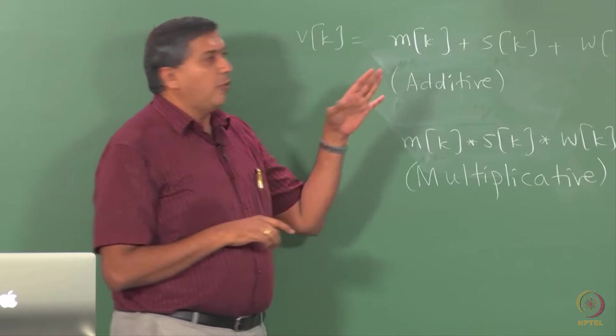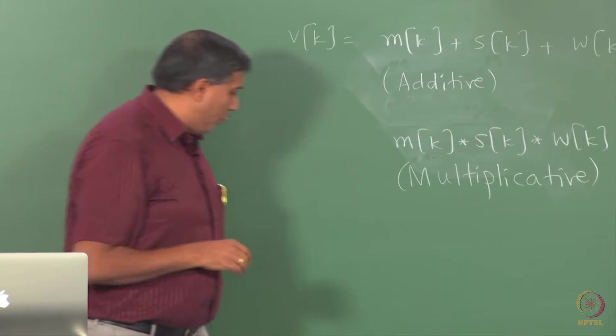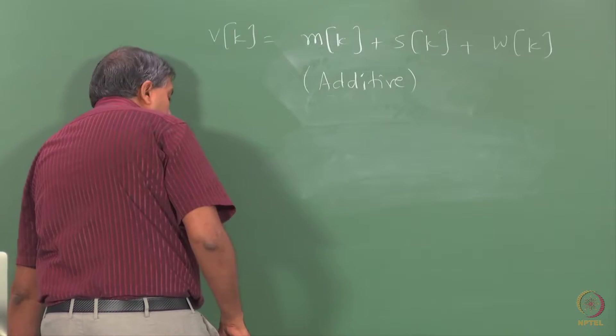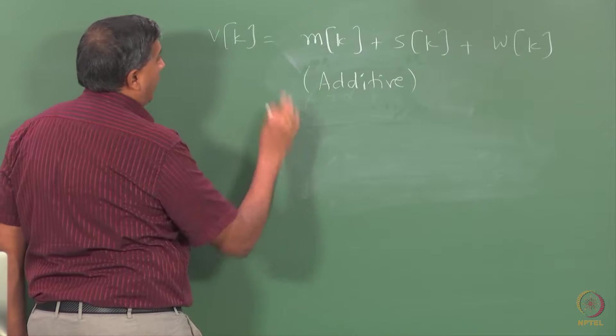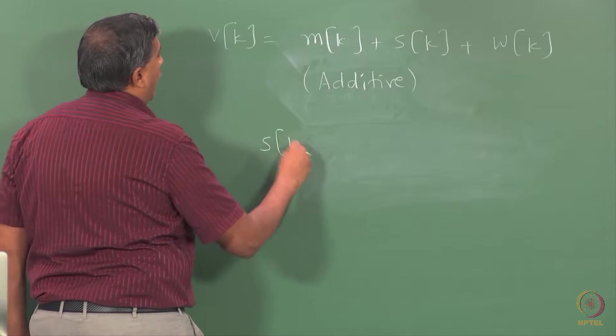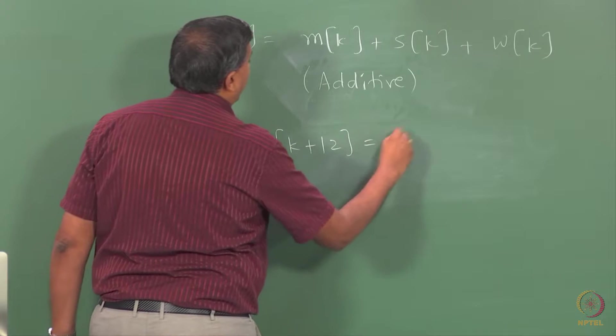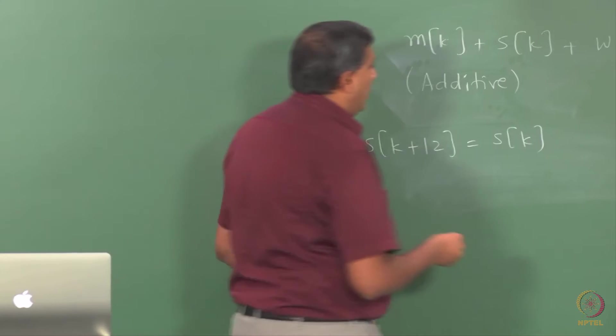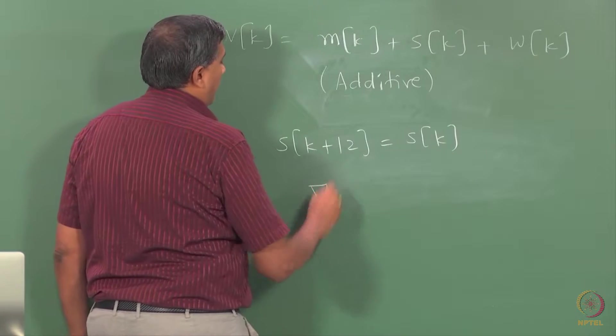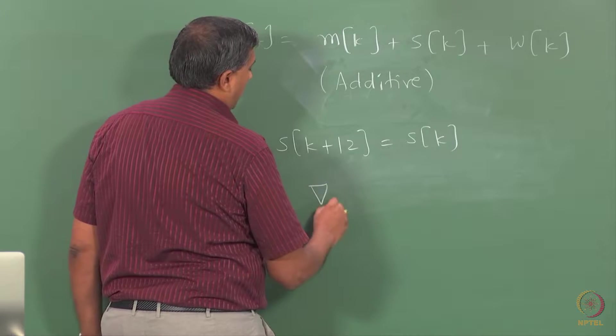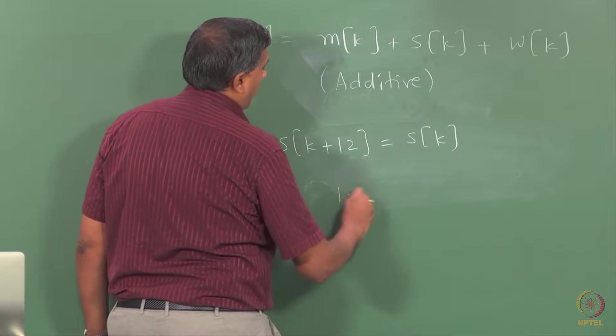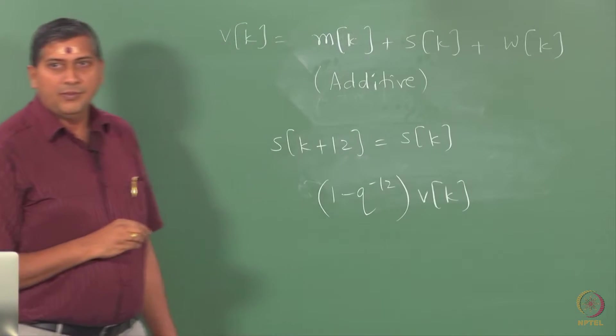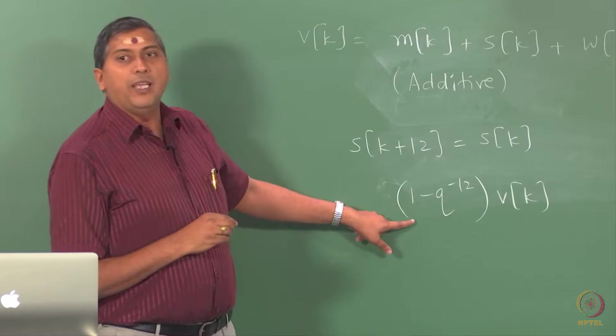The regular differencing takes care of linear trends as I show you on the screen, and the other differencing takes care of... suppose I have a pure periodic signal of period 12, then I know that S_{K+12} is S_K for the CO2 cycle, for example, CO2 data. Then I can actually construct here a delta_12 which is 1 minus Q to the minus 12. I can perform this kind of an operation on V_K. What does that do? V_K minus V_{K-12}.